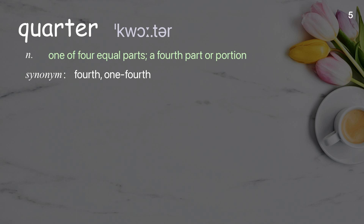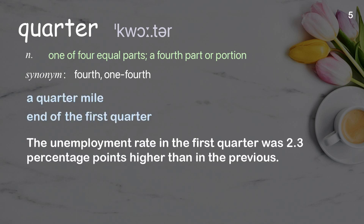Quarter: one of four equal parts; a fourth part or portion. Examples: a quarter mile, end of the first quarter. The unemployment rate in the first quarter was 2.3 percentage points higher than in the previous.